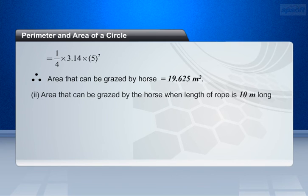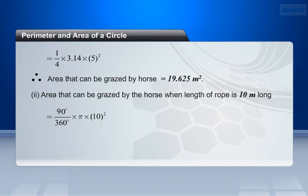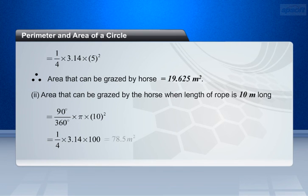Now, the area that can be grazed by the horse when length of rope is 10 meters long equals 90 degrees by 360 degrees into pi into 10 square. This is equal to 1 by 4 into 3.14 into 100. Therefore, area that can be grazed by horse with 10 meters long rope equals 78.5 meter square.